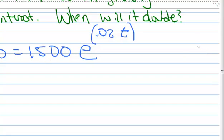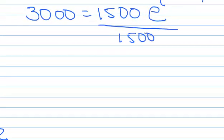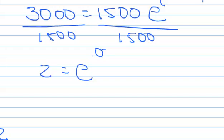T is an exponent, so we know somewhere we're going to have to use the logs. So let's first start by dividing both sides by $1,500. $3,000 divided by $1,500 is 2. So I have 2 equals E to the 0.02T.